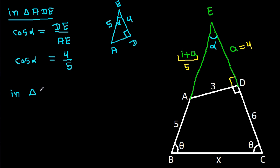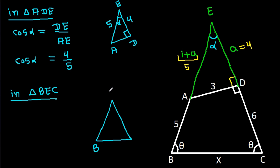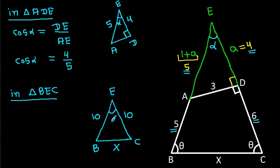In triangle BEC: BE equals AB plus AE equals 5 plus 5 equals 10, and CE equals CD plus DE equals 6 plus 4 equals 10. BC is X, and this angle is alpha.